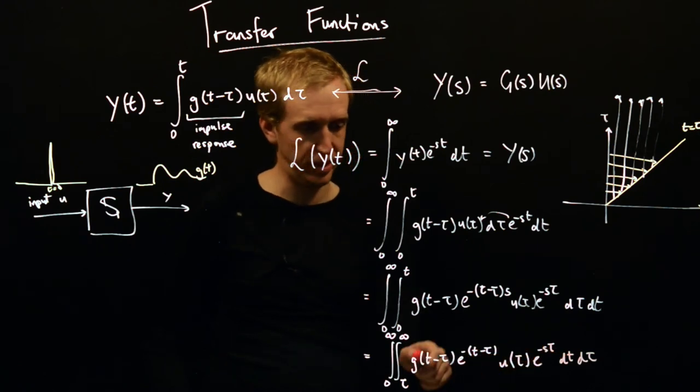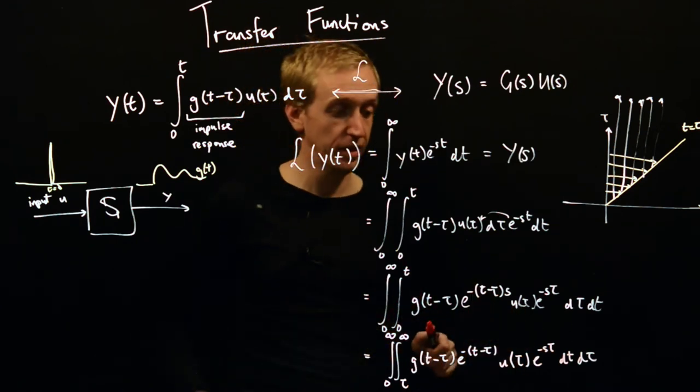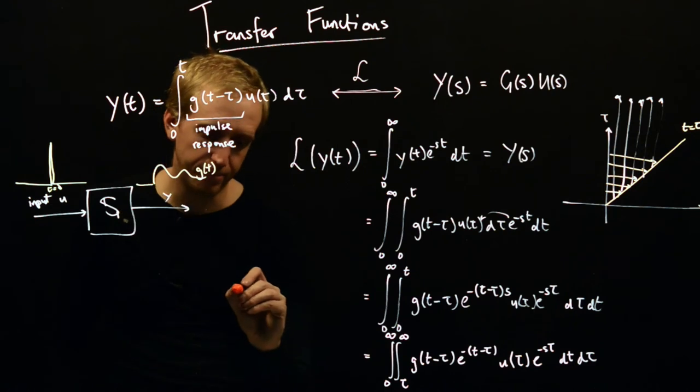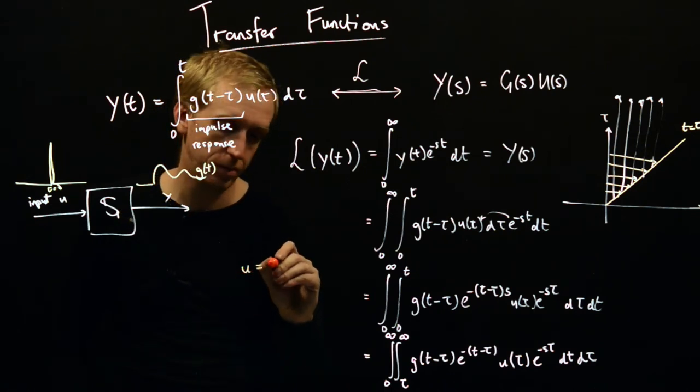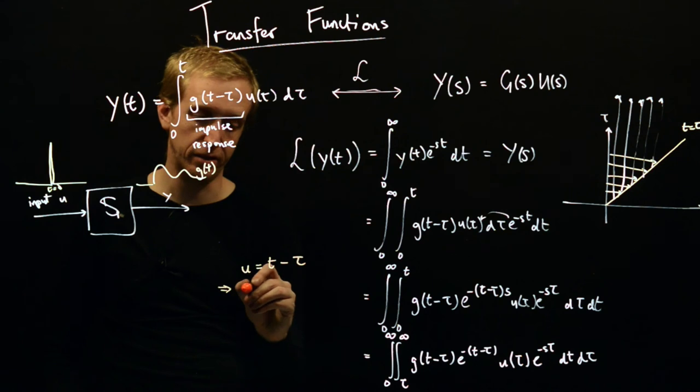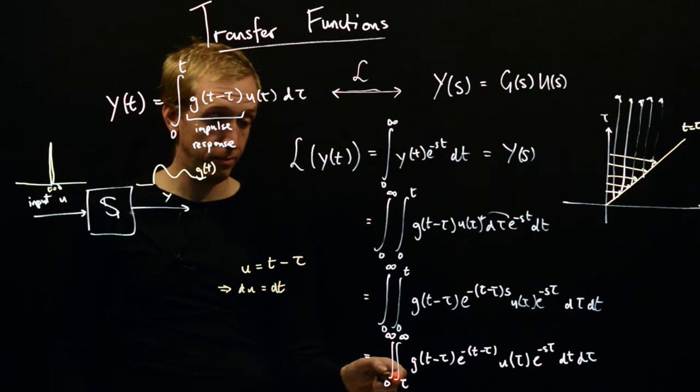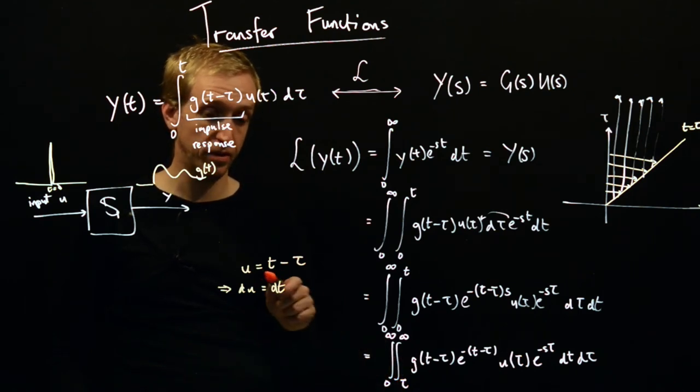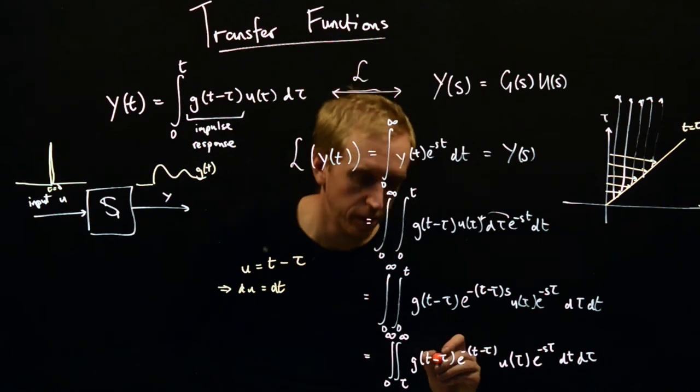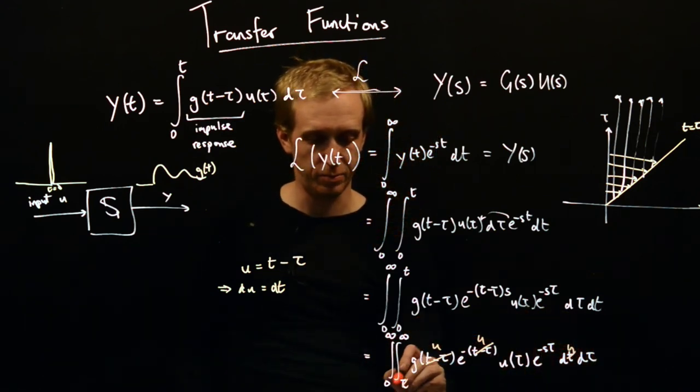With one final variable substitution we'll be done. We'll replace, we'll do the substitution, we'll say u is equal to t minus tau and in particular for constant tau this implies that du is equal to dt. In particular when t is equal to tau u is equal to 0 and when t is equal to infinity u is equal to infinity. Doing this substitution this becomes a u, this becomes a u, dt becomes du and this becomes a 0.